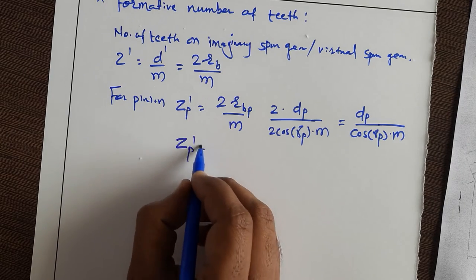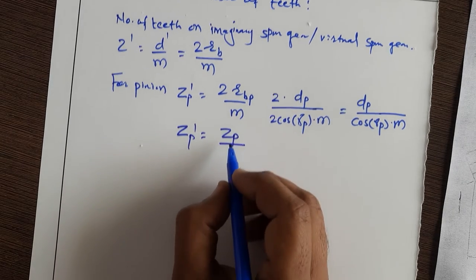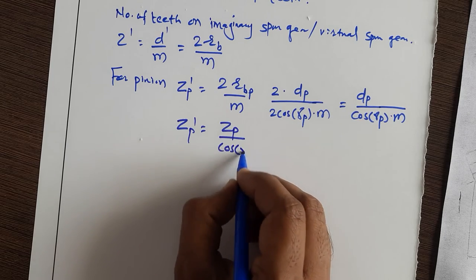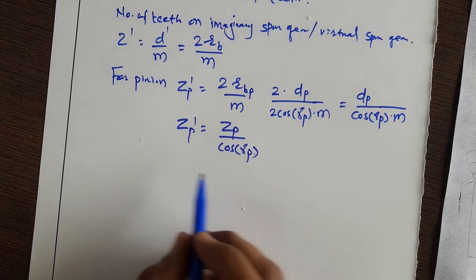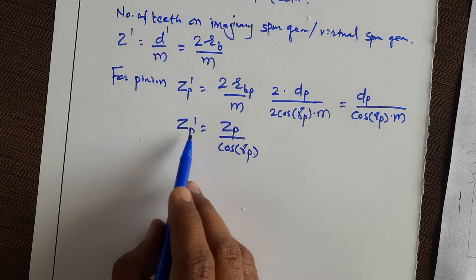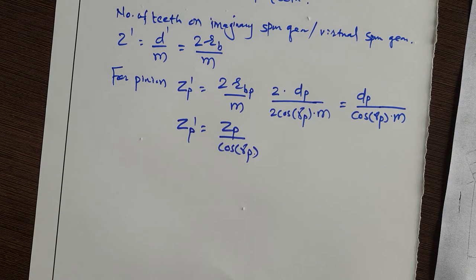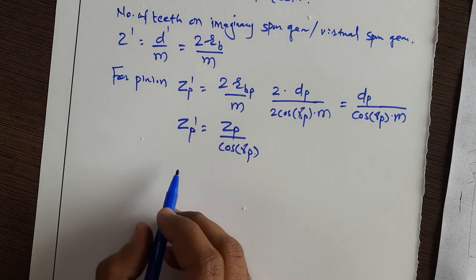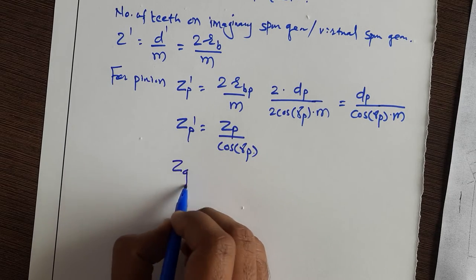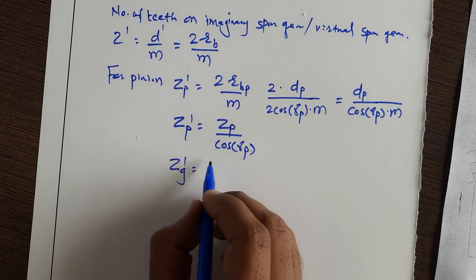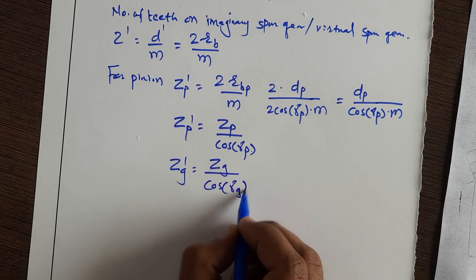So Z_P' equals Z_P divided by cos(γ_P). In this way you can find the number of teeth on the equivalent spur gear for the pinion. Similarly for the gear, Z_G' equals Z_G divided by cos(γ_G).